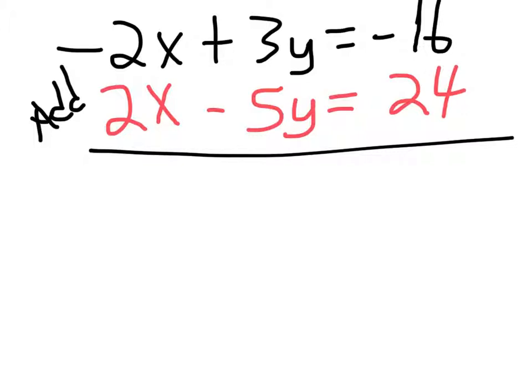And I'm choosing adding because when you do negative 2x plus 2x, it makes nothing and it cancels out, and we're left with just one variable to deal with.